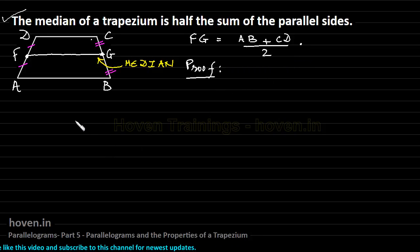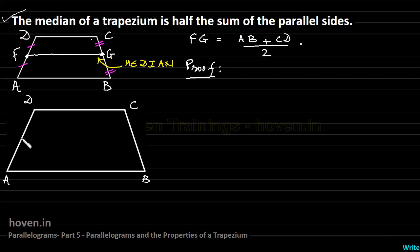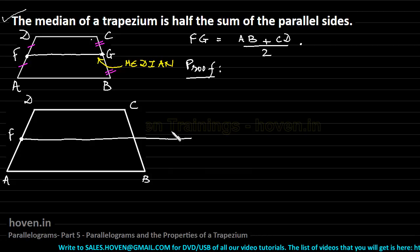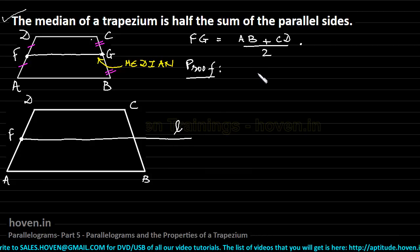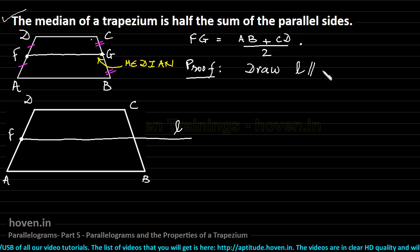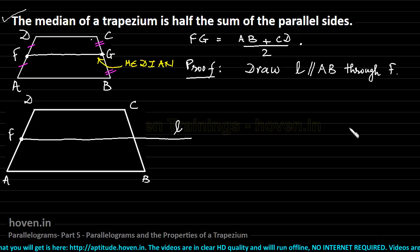Let us now go to our proof. We will prove it using this figure. Suppose this is A, B, C and D. The proof requires us to take point F at the midpoint of AD, and through F draw a line L parallel to side AB.